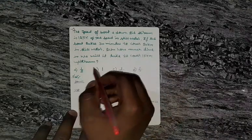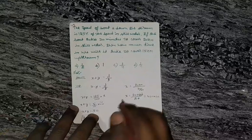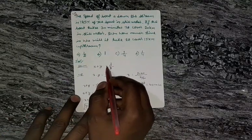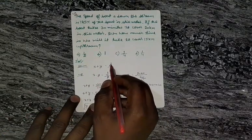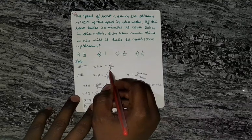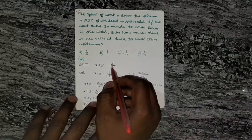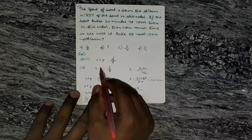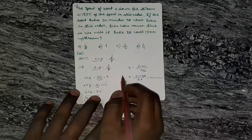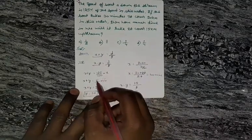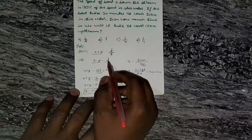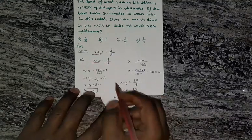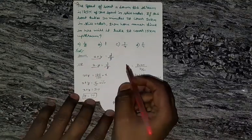In downstream, x plus y is the speed, and in upstream, x minus y is the speed. The formula is: speed equals distance divided by time, which applies for both upstream and downstream.